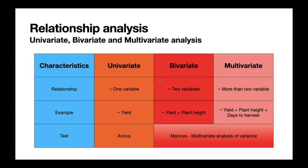In a univariate relationship, we study one variable — for example, the relationship between individuals and their yield level. In bivariate relationships, we consider two variables, such as yield level and plant height. In multivariate relationships, we consider more than two variables, like plant yield, plant height, and days to harvest. The test for univariate analysis is ANOVA; for bivariate and multivariate analysis, we use MANOVA — multivariate analysis of variance.